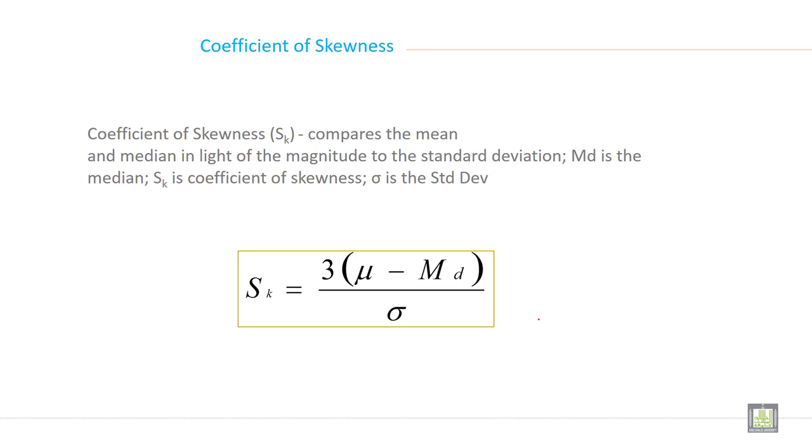Coefficient of skewness: how you can calculate the skewness? The symbol is Sk. Compares the mean and median in light of the magnitude to the standard deviation. MD is the median. Sk is the coefficient of skewness and sigma is the standard deviation.